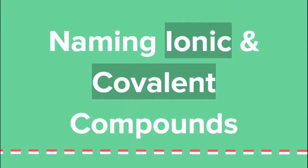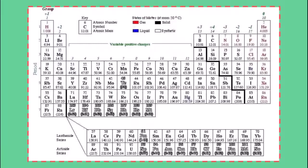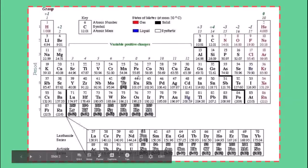Today we're going to be naming ionic and covalent compounds. First of all, everyone should get comfortable with the periodic table — where the charges are for the first two blocks, how the d-block elements can have multiple charges, the charges of the non-metals, and the placement of the metals and non-metals.